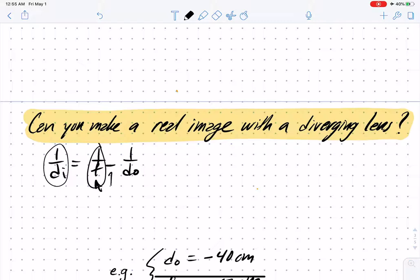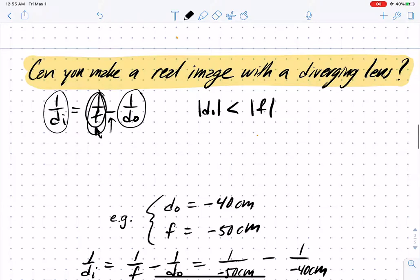You can see now why having a negative object distance helps because we're subtracting it. It's possible if this is bigger in magnitude than this, and the object distance is negative. The magnitude of this has to be smaller than the magnitude of that. Here's an example: we could take the object distance as negative 40 and the focal length as negative 50.